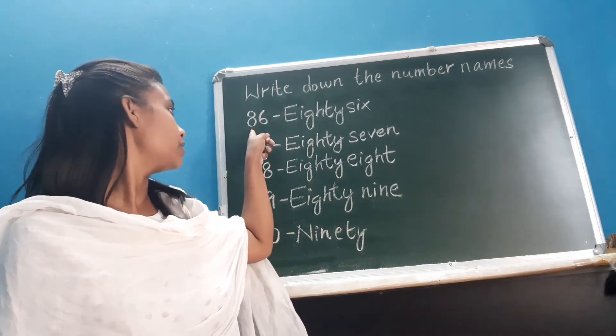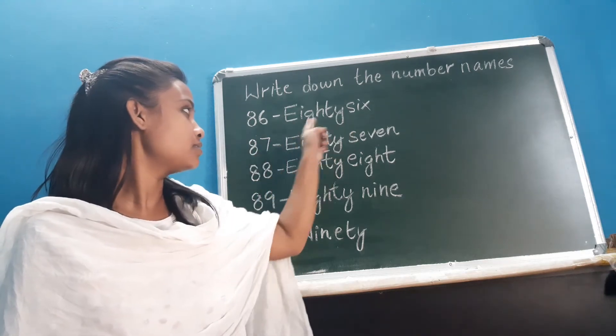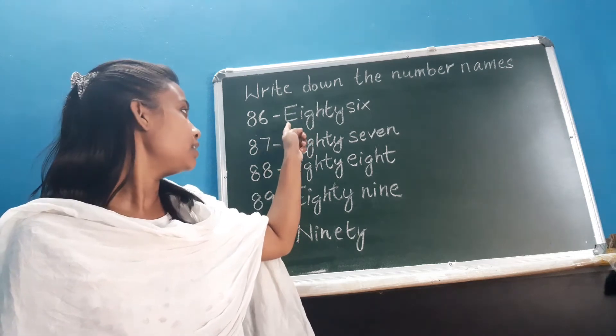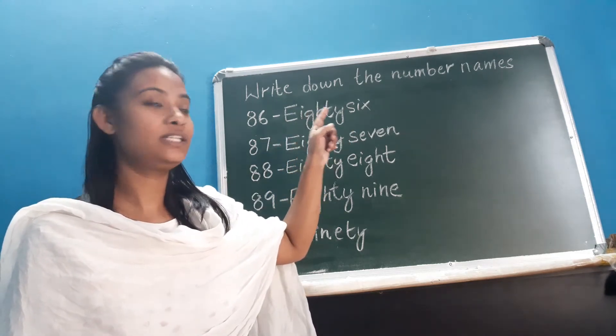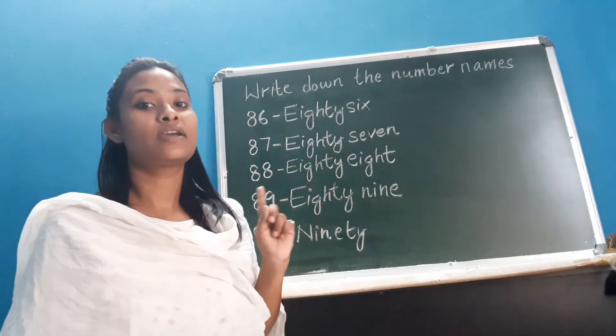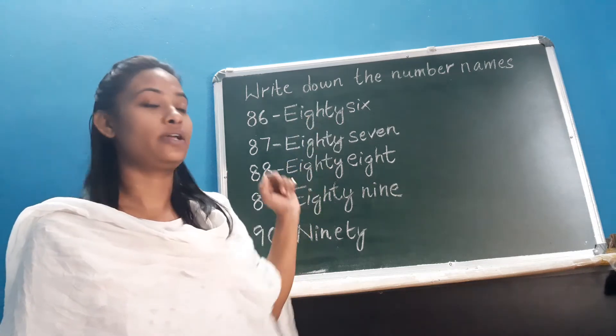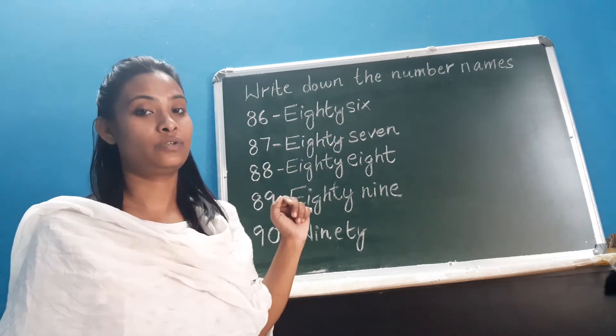First number is 86, and this is the spelling of 86, alright? E, I, G, H, T, Y, eighty, S, I, X, six, eighty six. I repeat, E, I, G, H, T, Y, eighty, S, I, X, six, eighty six. Okay.